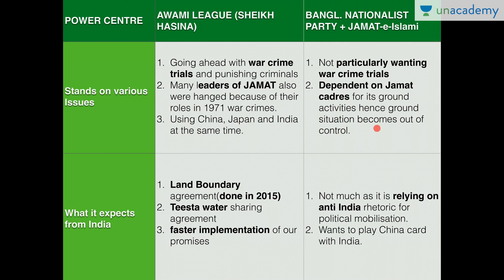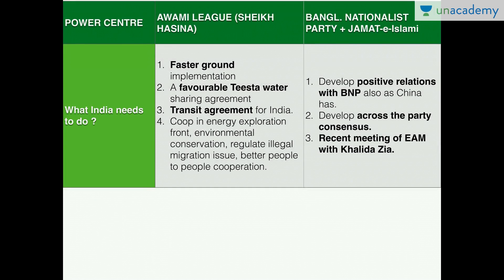What Bangladesh expects from India: the Land Boundary Agreement — which has been given — Teesta water agreement, and faster implementation of promises. However, the Bangladesh Nationalist Party wants to play the China card with India. What India needs: faster ground implementation, a favorable Teesta water agreement, a comprehensive transit agreement, and cooperation in energy, conservation, and curbing illegal activities. At the same time, India also wants to develop positive relations with the BNP and build an across-the-party consensus. In the next part, we will assess our foreign policy, the present state of relations, and the importance of Bangladesh.